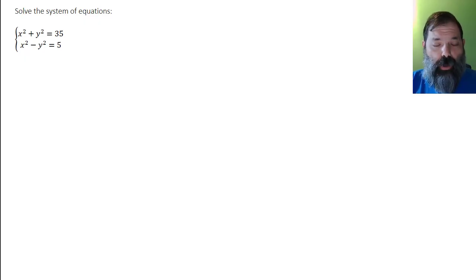Solve the system of equations: x squared plus y squared equals 35, which is a circle, and x squared minus y squared equals 5, which is not a circle but actually a hyperbola.